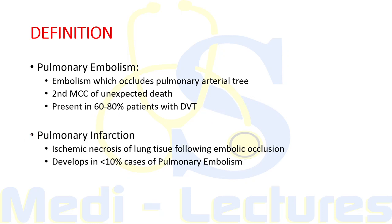Pulmonary infarction is the ischemic necrosis of lung tissue following embolic occlusion — it follows pulmonary embolism and develops in less than 10 percent of all cases. Pulmonary infarction is more common in patients who have underlying cardiac or pulmonary disease.